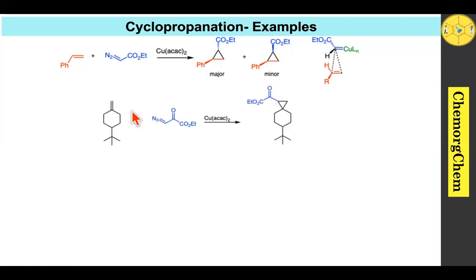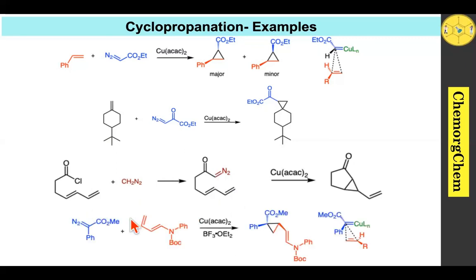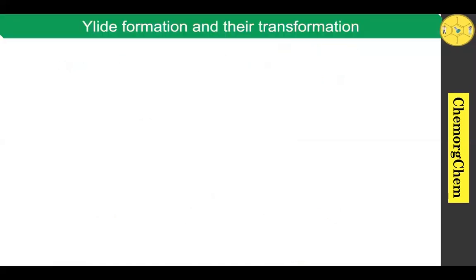In another example, an alkene readily reacts with the diazo compound in the presence of copper acetylacetonate, which generates copper carbene in situ, which then readily reacts with the alkene to produce the corresponding cyclopropane compound. In yet another example, an acid chloride reacts with diazomethane, which initially produces a diazo compound; after the formation of the diazo compound, it reacts with the double bond to produce the corresponding cyclopropane compound — meaning that formation of small ring systems is highly favored compared to larger ring systems. When a terminal alkene is used with copper acetylacetonate, where BF3 etherate acts as a Lewis acid, the corresponding cyclopropane compound is also produced.